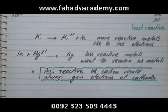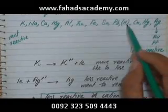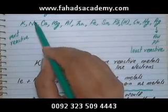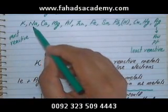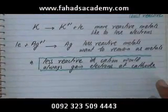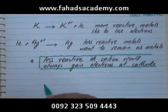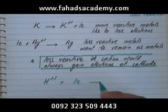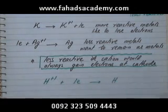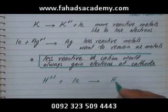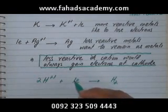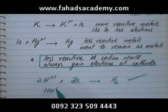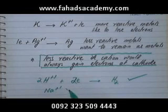In our example we have H⁺ and Na⁺. H⁺ is less reactive than Na, so H⁺ is the one that gains electrons. Na is extremely reactive and wants to remain as Na⁺, so it is not discharged. The equation at the cathode is: 2H⁺ + 2e⁻ → H₂. Since hydrogen is always diatomic, H₂ gas is produced at the cathode, while Na⁺ remains in solution.